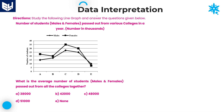Hi everyone, welcome to the session. In this session I'm going to explain line graph data interpretation. First of all, we need to read the information carefully, and according to the given information we need to solve the questions. First, look at the information provided in this line graph: number of students passed out from various colleges in a year.